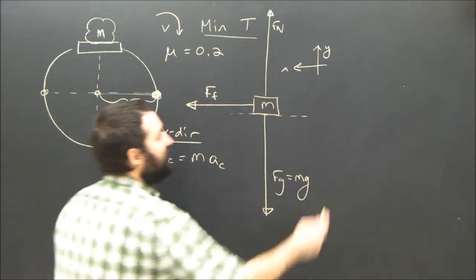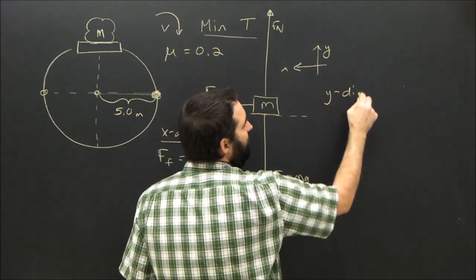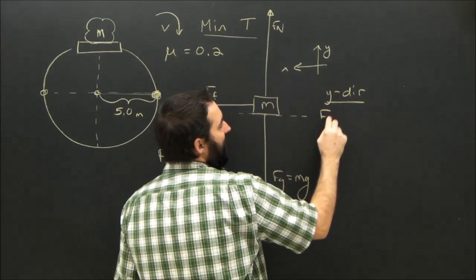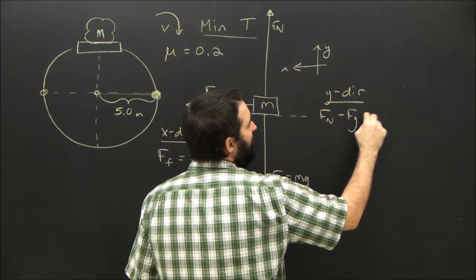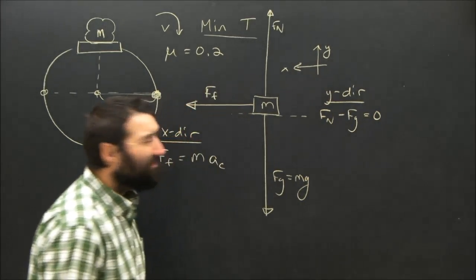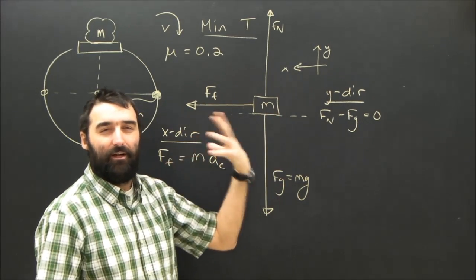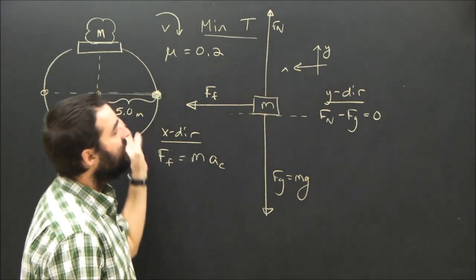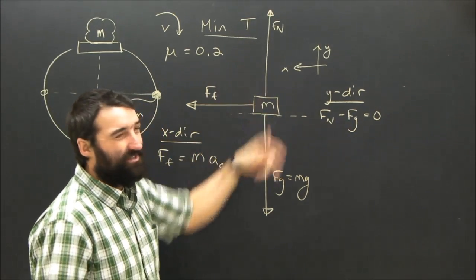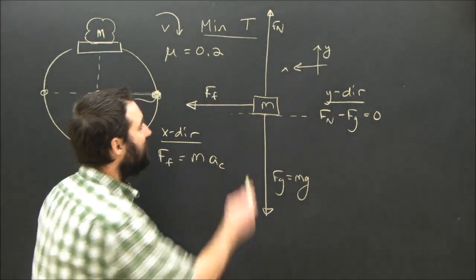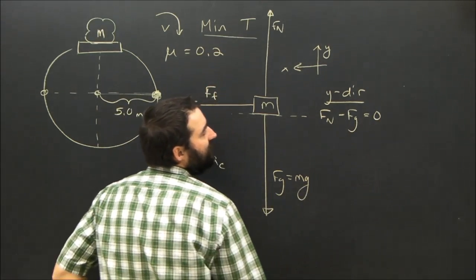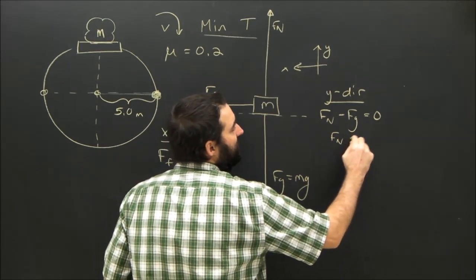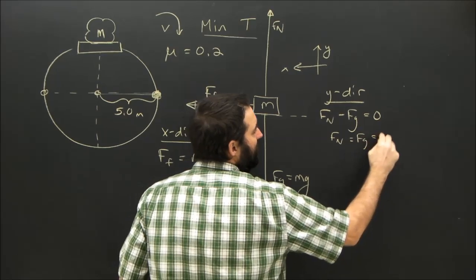I'm sort of stuck here until I draw my y direction equation. When I do, I see that Fn minus Fg is going to have to be equal to zero. Remember, we're assuming this thing is speeding up gradually. So, like imagine going up a tiny bit and staying that way for a whole revolution. Okay, so the acceleration is zero. The thing is not speeding up at this speed. So, this is the maximum place. The acceleration is zero. The normal force is going to be equal to gravity, which is the force Fg.